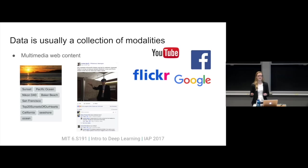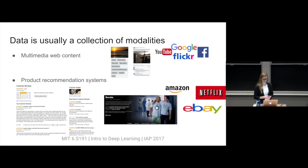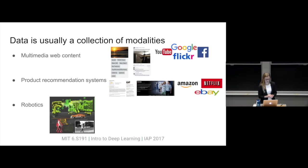Most of the data we see in our daily lives is in multiple modalities at the same time. On Facebook, you might see a post that has a text description, an image, as well as likes or comments. On Flickr, you might have an image that also has tags or a caption. You might have a product recommendation system like Netflix, where you've got the audio and video of the actual TV show, but also useful information in the description or in the user comments and ratings.